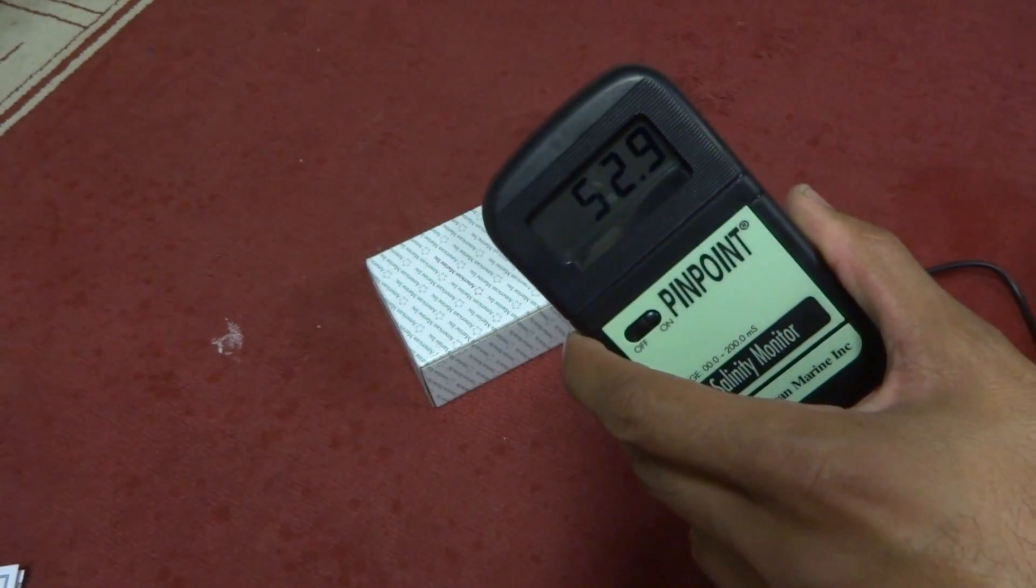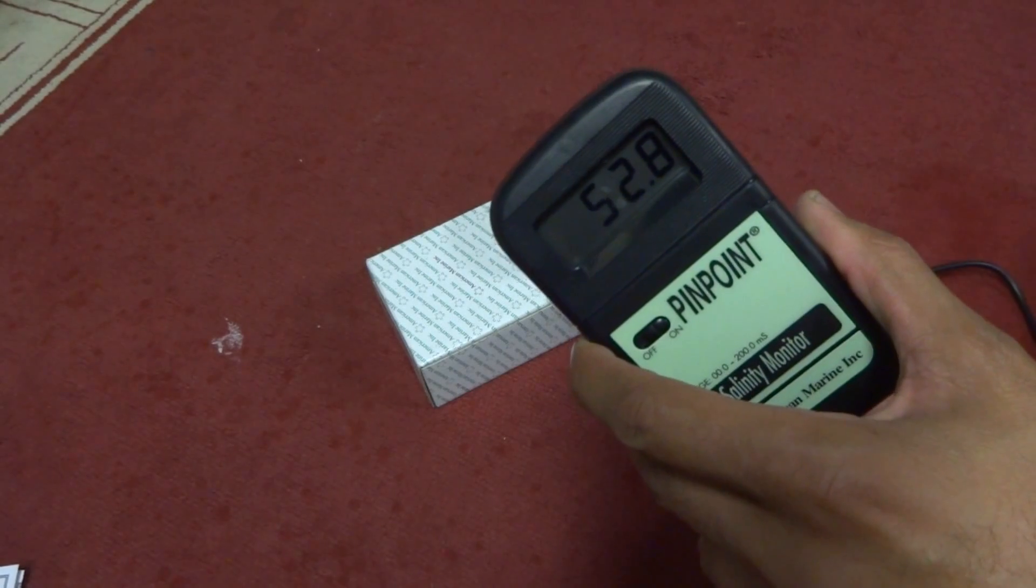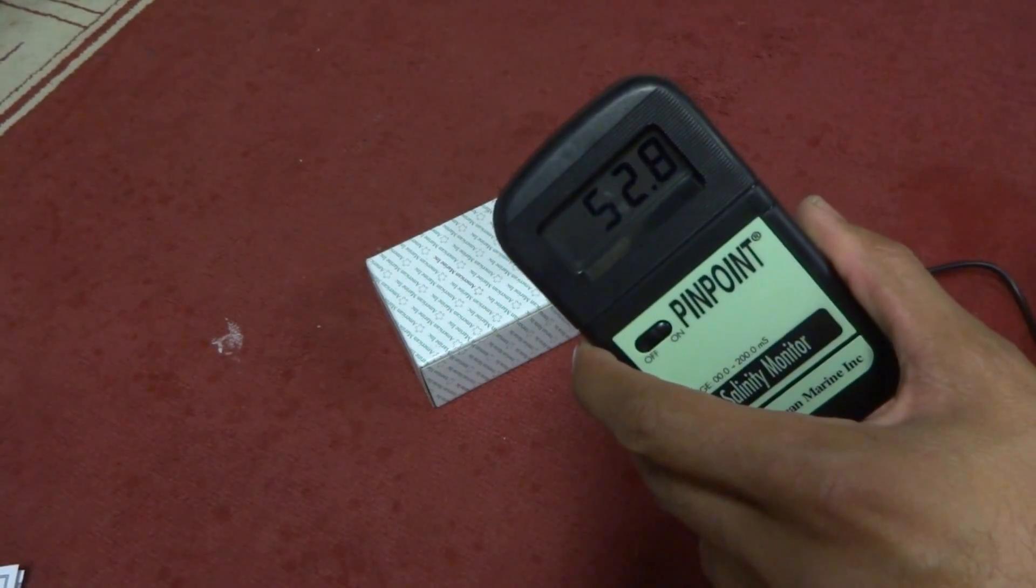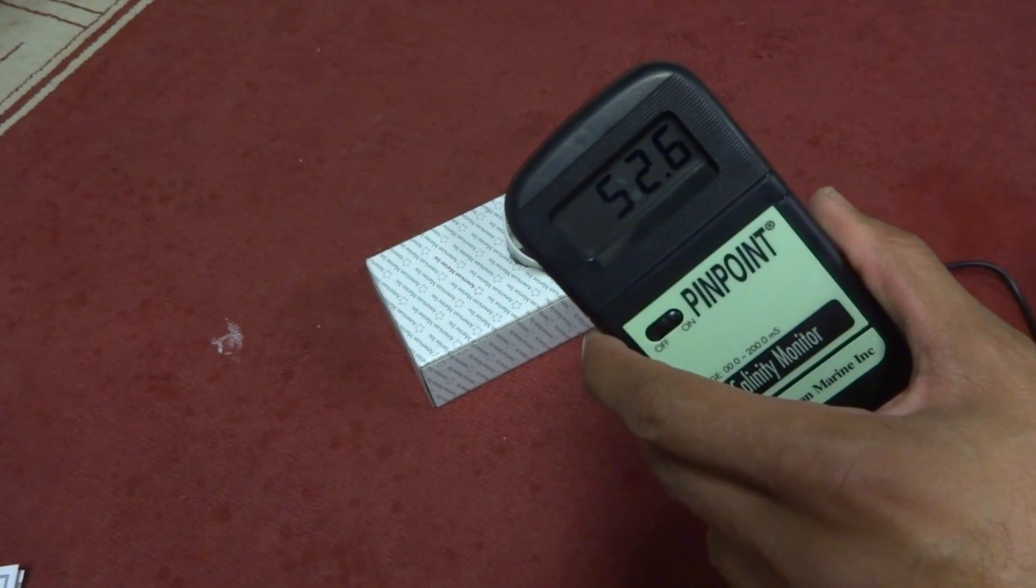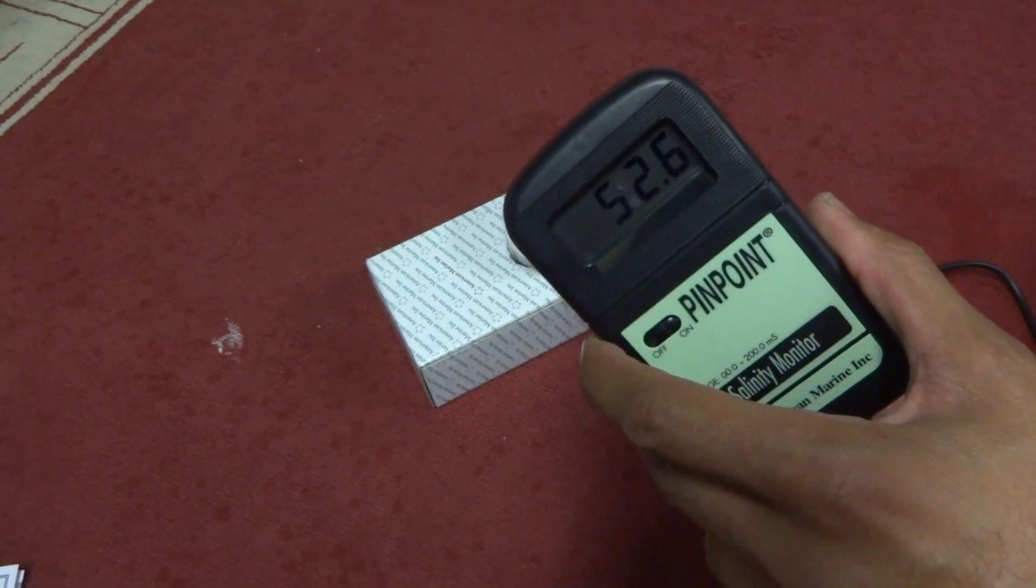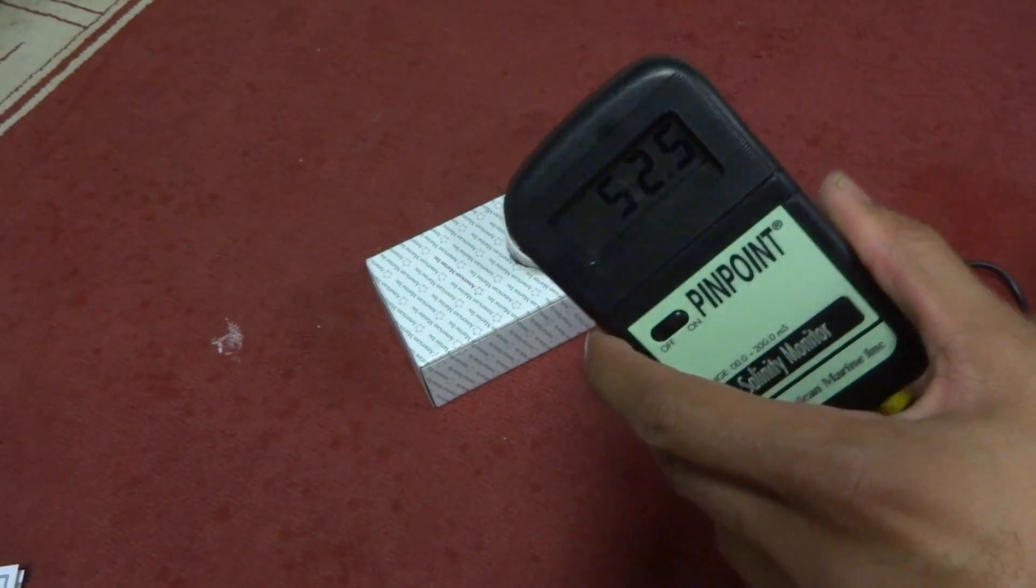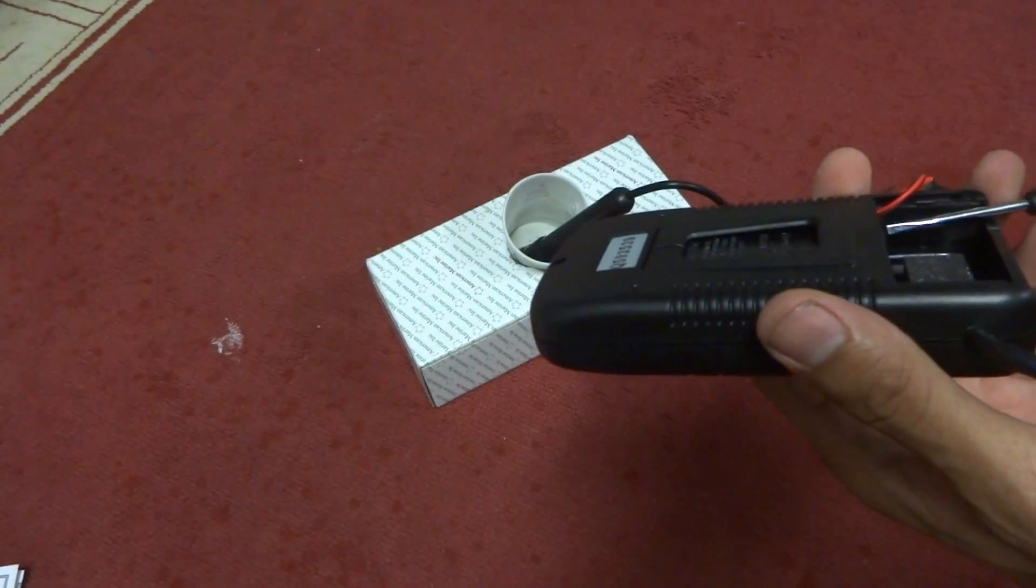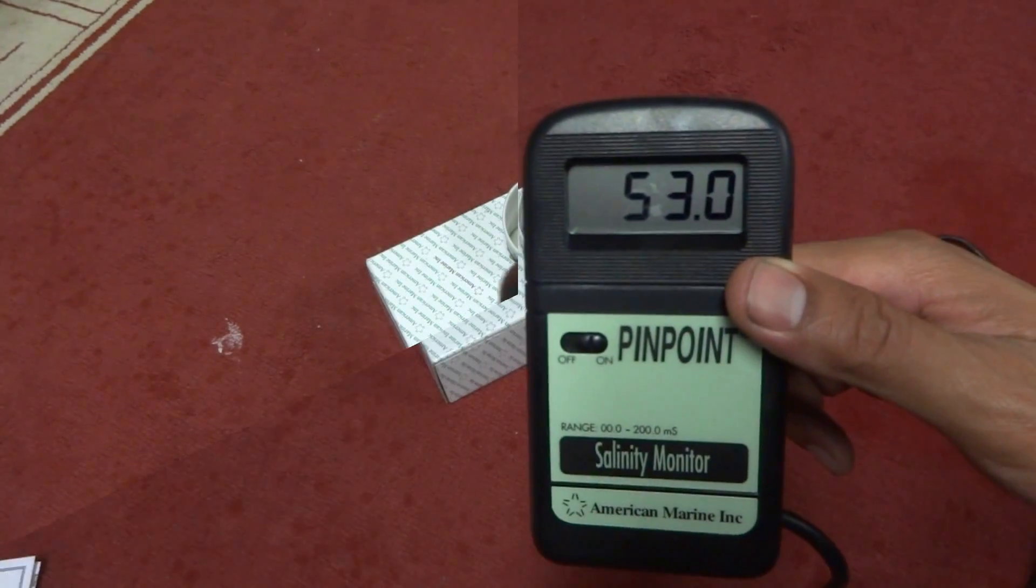And the one thing I didn't mention is when you place the probe into the calibration fluid you want to leave the probe in the fluid for one to two minutes to allow the probe to adjust to the temperature of the calibration fluid itself. And what I'm doing is making very small adjustments to the screw in the back to get this thing to where we want it which is 53.0.